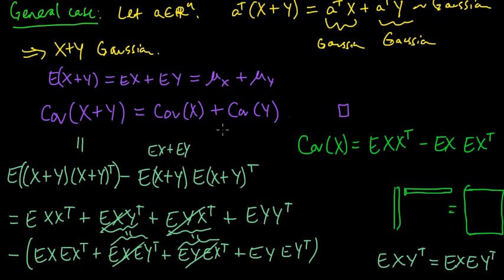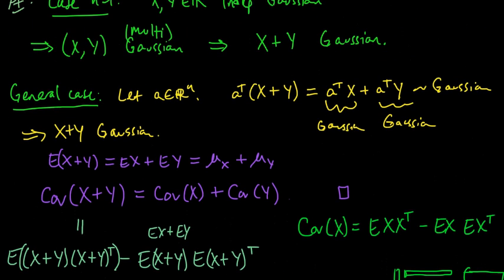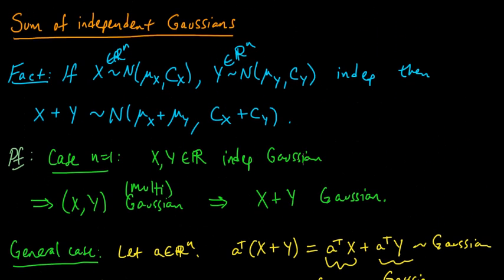Hopefully that clarifies why this is true. Once you know the right tricks — how to write down the covariance and the intuition from the one-dimensional case — it works out just the same in higher dimensions. So that proves the theorem: the sum of independent Gaussians has the sum of the means and the sum of the covariances. Of course you could extend this to a sum of finitely many Gaussians by induction, just repeating this argument several times.